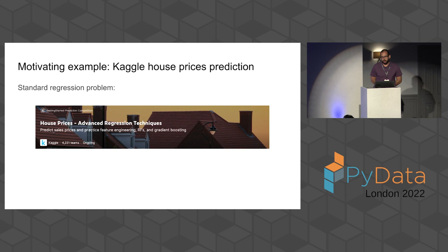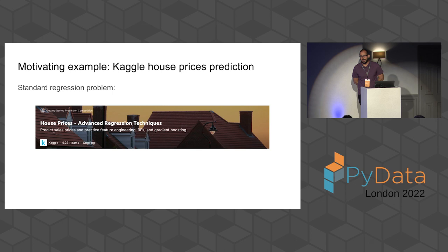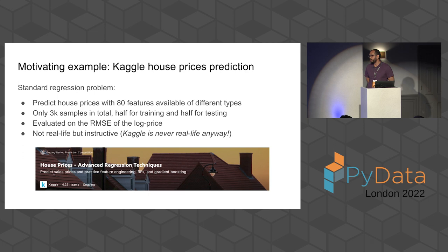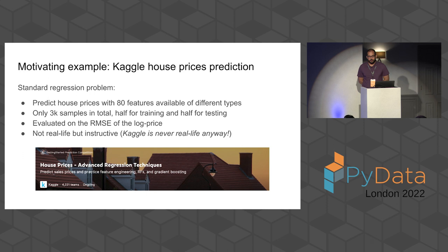Let's start with a Kaggle house price prediction problem. Anyone here was in the tutorial yesterday for data validation? I was quite surprised because the presenter used the same dataset as I did — complete coincidence. It's a dataset which is quite small but interesting. We have 80 different features of different types: categorical, numerical, and boolean. We just have 3,000 samples, so this is a very small dataset. We evaluate on the RMSE — the root mean squared error of the log price.